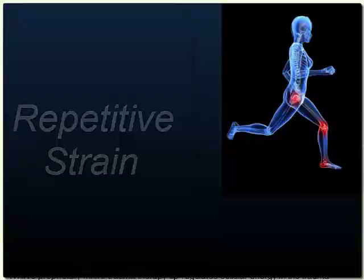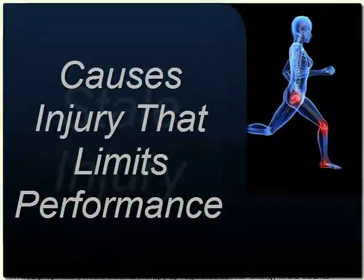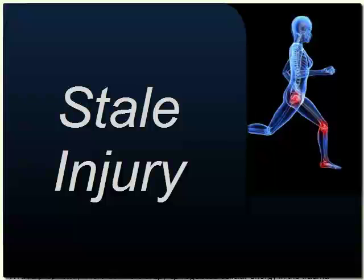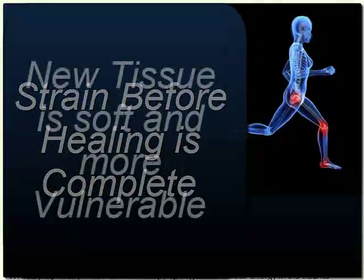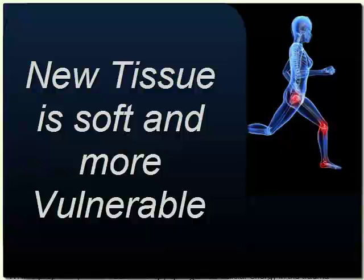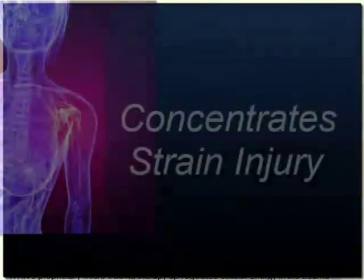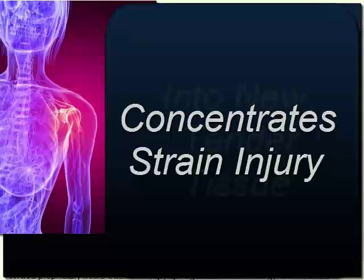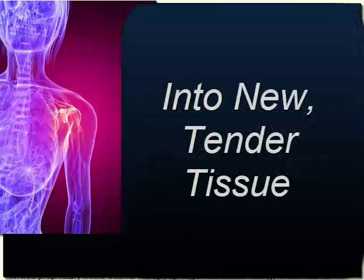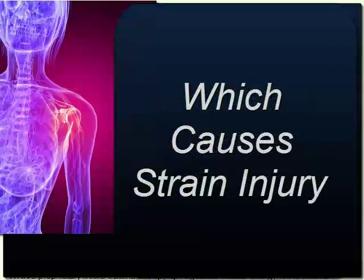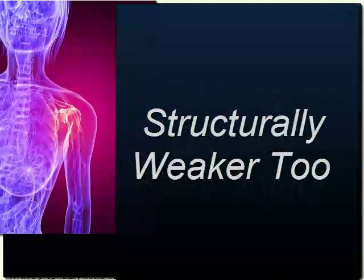These injuries cause chronic injury that eventually limits performance. Stale injury occurs when a recently healed tendon or ligament has a weak spot. This new tissue is more vulnerable to microtrauma because it's not as tough as nearby mature tissue yet. This tender flexibility naturally concentrates strain in these softer, more flexible areas, which accumulates into strain injury more rapidly than in surrounding tougher mature tissue. These areas are also structurally weaker, adding repeat injury vulnerability.